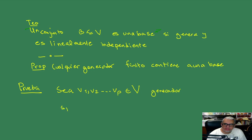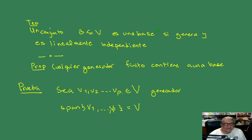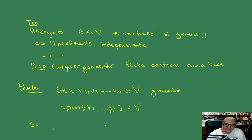Recordemos que esto significa que el span, es decir el conjunto de todas las combinaciones lineales de estos vectores, es todo el espacio. Entonces, si el propio conjunto {Bi, i de 1 a P} es linealmente independiente, ya terminamos, porque el mismo es una base.